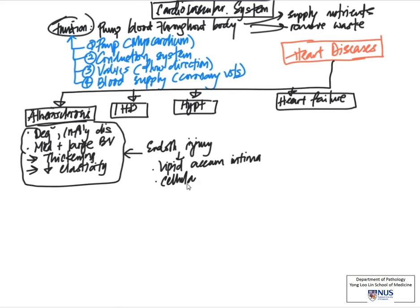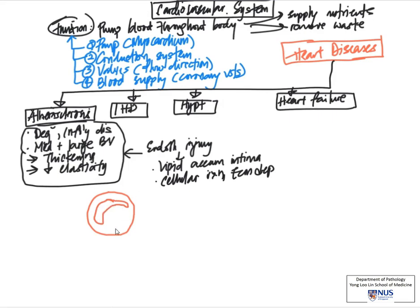Together with lipid accumulation, there is a cellular reaction comprising smooth muscle cells, fibroblasts, inflammatory cells, foam cells, as well as deposition of extracellular matrix. Here I am drawing a vessel — this would be the lumen. In atherosclerosis, the lumen is often very much narrowed because of the deposition of this lipid-rich material and the cellular reaction. So we have the lipid-rich material in the intima, and the intima is markedly thickened.